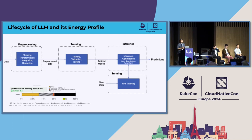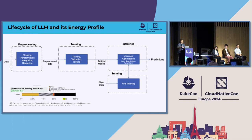Since this is a tutorial session, we have the luxury of walking through what the steps in the large language model process look like. First you do a lot of pre-processing — data cleaning, transformation, integration, and reduction. Then that data goes to training, which involves a lot of matrix multiplication, forward pass, backward pass, and heavy computation.